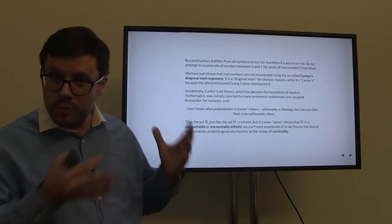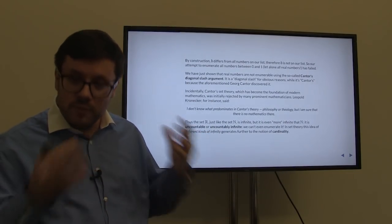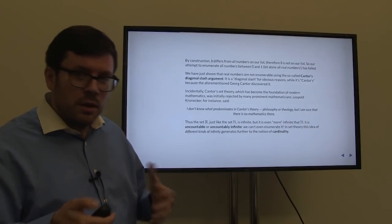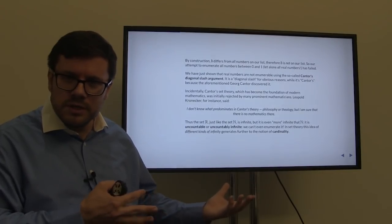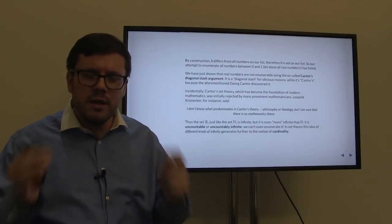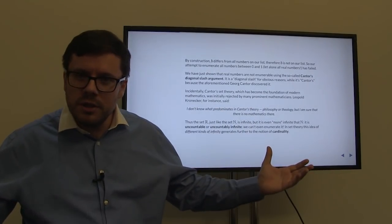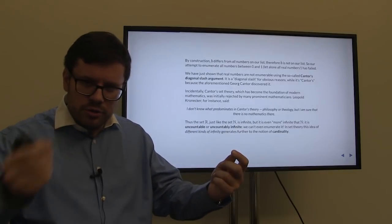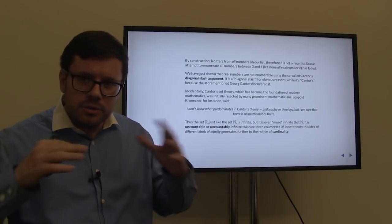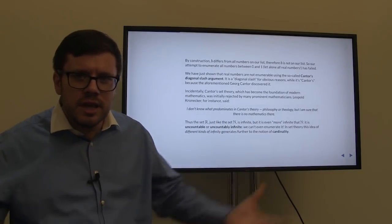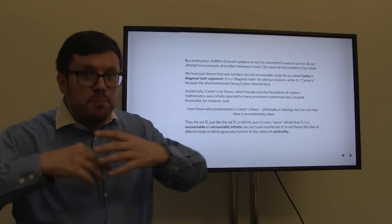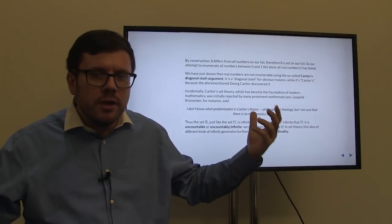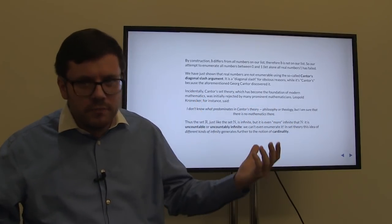Cantor's set theory, which is the foundation of modern mathematics, was frowned upon by many of Cantor's contemporaries. Cantor formalizes the notion of infinity. We can now see that real numbers are infinite, and they're somehow more infinite than fractions. There are different kinds of infinities: fractions and natural numbers are equivalent — infinite in the same kind of sense — but real numbers are bigger. We cannot enumerate them, so it's a different kind of infinity. We are looking at a hierarchy of different infinities.